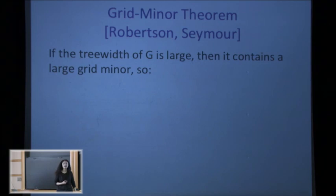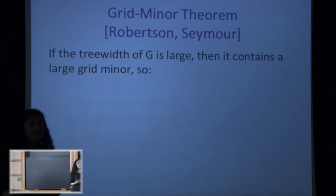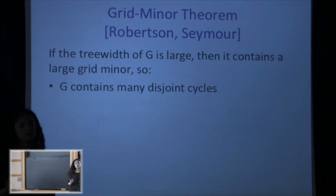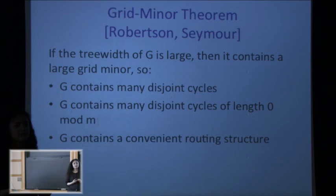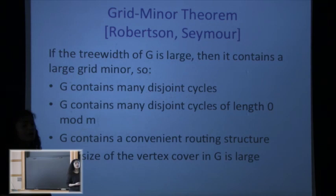One of the reasons this theorem is so useful is that the grid is a very convenient graph — it's easy to reason about and easy to prove things about. Just by knowing that your graph has a large grid minor, you can say a lot: for example, that the graph has many disjoint cycles (just look at the grid), or many disjoint cycles of length zero modulo m. The grid is also a very convenient routing structure for routing problems, and you can also conclude that the vertex cover or feedback vertex set is large.